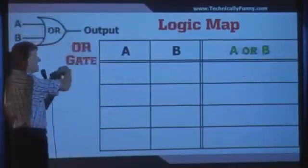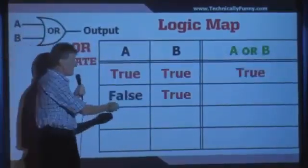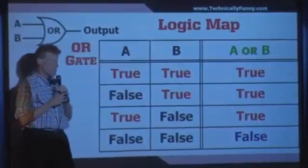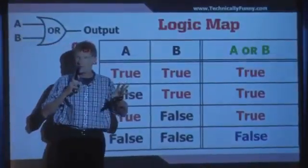An OR gate says if either one is true, the output's true, and only when both inputs are false is the output false. Nothing funny in there.